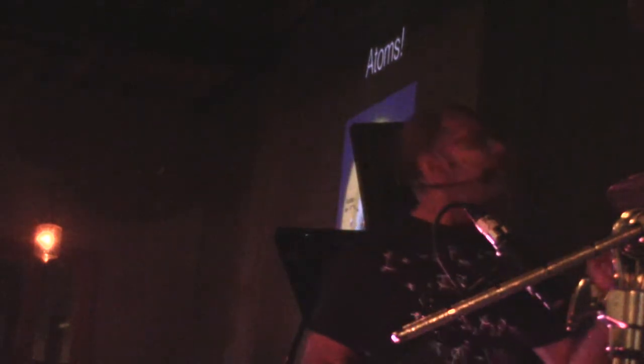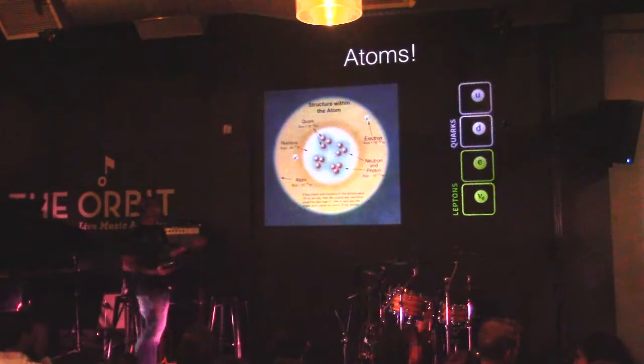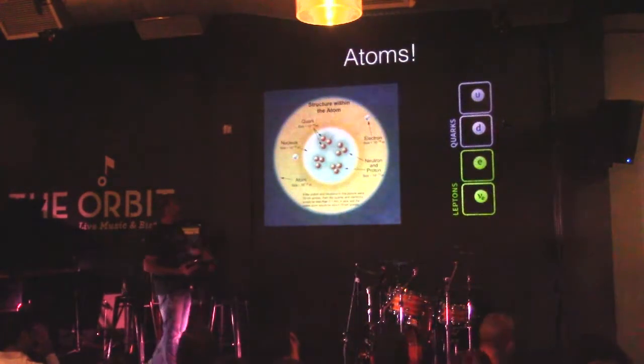Just something about atoms: if the nucleus in this picture was the size of the top of a beer mug — about 10 centimeters in diameter — then the electron cloud would extend 10 kilometers outside of that. So just to give you some idea of the scale of these things.